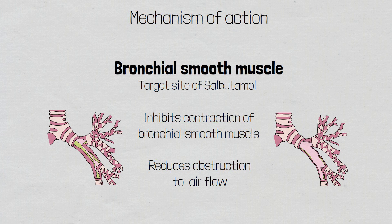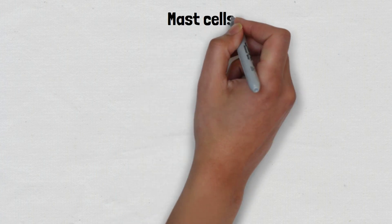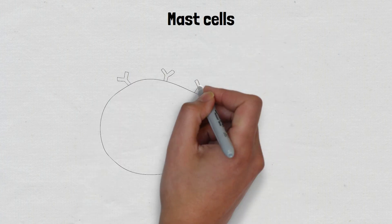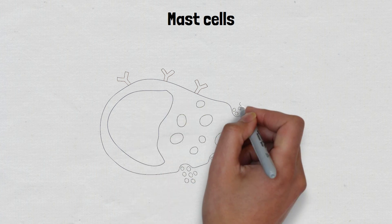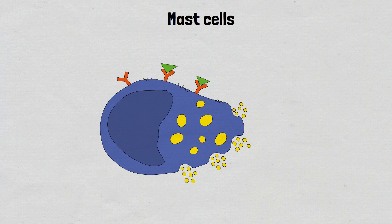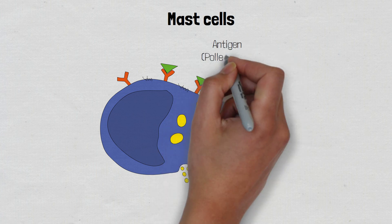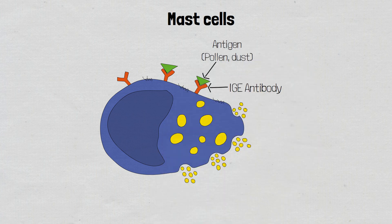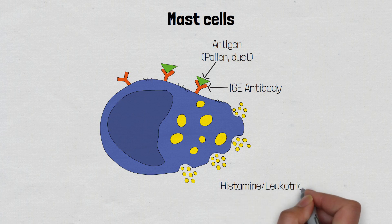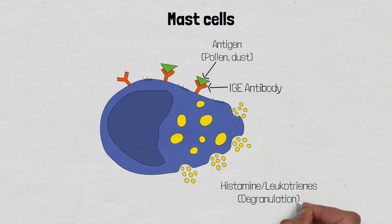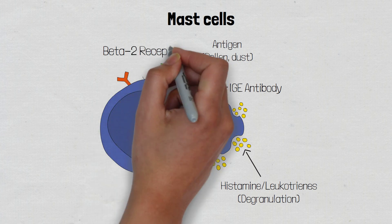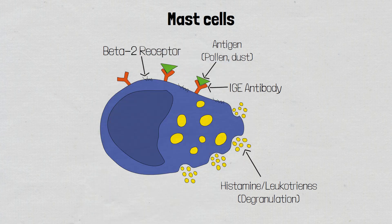Another clinically important site where beta-2 receptors are found is on the surface of mast cells. During an asthma attack or during anaphylaxis, these mast cells undergo degranulation — the release of histamine and leukotrienes that are responsible for bronchospasm, vasodilation and increased capillary permeability. Stimulation of beta-2 receptors on the surface of mast cells will inhibit the release of these inflammatory mediators, which is extremely beneficial in asthma attacks and anaphylaxis.